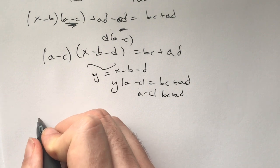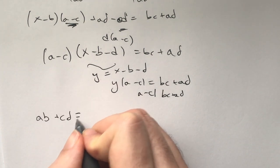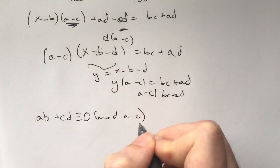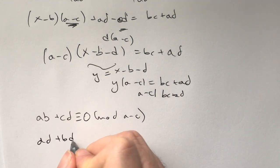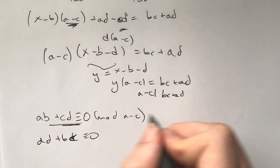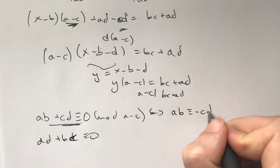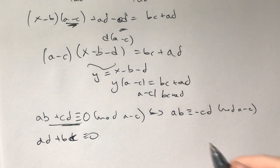This is looking at modular arithmetic. So ab plus cd is congruent to zero modulo (a-c), correct? And we need to prove that ad plus bc is also zero. This is equivalent to ab is congruent to negative cd modulo (a-c).